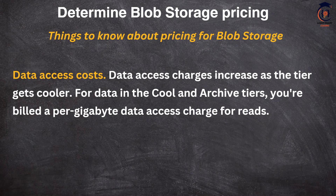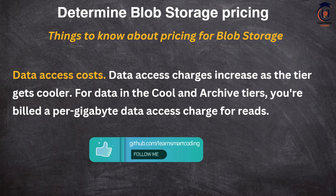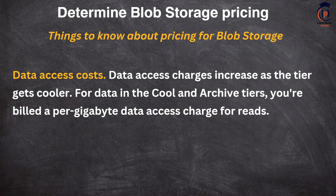The second factor is data access cost. Data access charges increase as the tier gets cooler. For data in the cool, cold, and archive tiers, you are billed a per-gigabyte data access charge for reads. If you have a document moved to cool, cold, or archive and you try to access it, the larger the file, the higher the read access charge — because Microsoft has to do significant work to bring that file back online. The rule of thumb: only move infrequently accessed files to tiers other than hot.